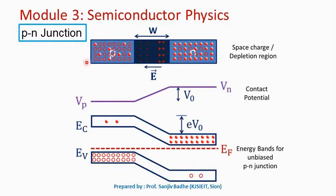Let us discuss P-N junction. A P-N junction is formed when a P-type semiconductor is joined with an N-type semiconductor. On the P-type side we have a large number of holes, so holes are the majority carriers. On the N side we have a large number of electrons, and electrons are the majority carriers.